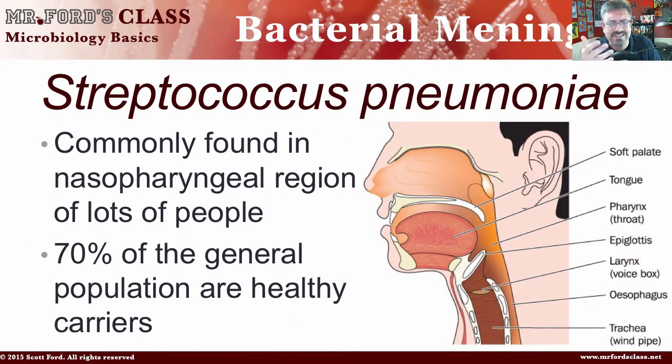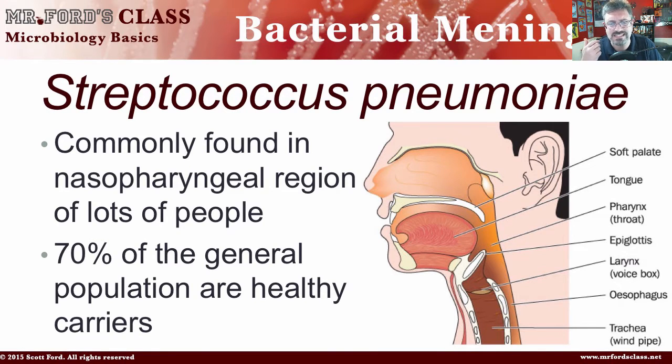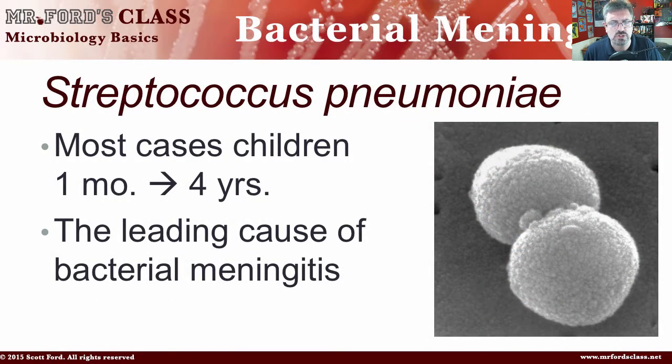It's commonly found back there, just like all the other bacteria we've talked about when looking at bacterial meningitis. This is not a rare bacteria — it's commonly found in about 70% of the general population as healthy carriers. Most cases occur in children between one month and four years old. This is a common theme across all pathology, bacterial pathology, and virology courses: most of the bad stuff happens to the very young and the very old because their immune systems aren't either fully formed yet or have been weakened over time.